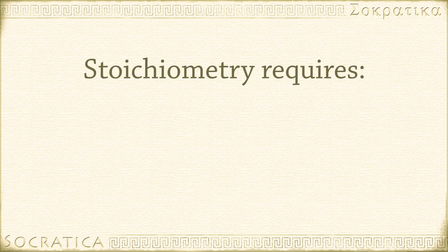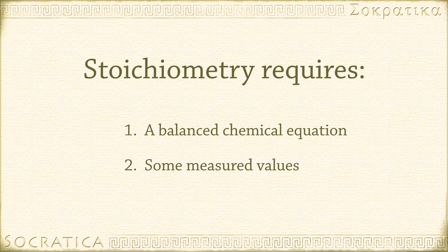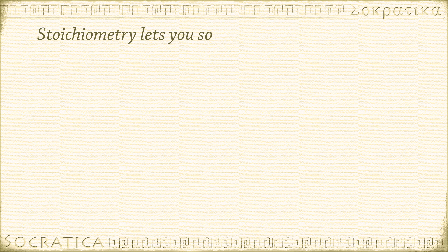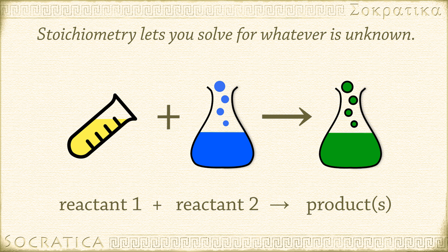You need two things to do stoichiometry. One, a balanced chemical equation — balanced is absolutely essential here. And two, some measured values: the amount of some of the chemicals involved in the reaction. You can use these two things to solve for whatever is unknown, the mass or volume of one of the other chemicals in the balanced chemical equation.